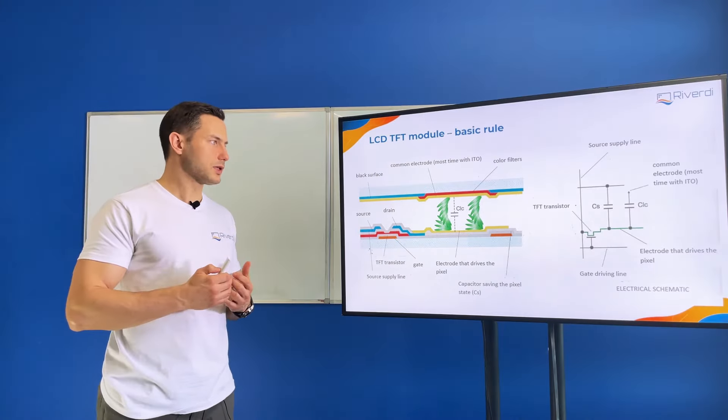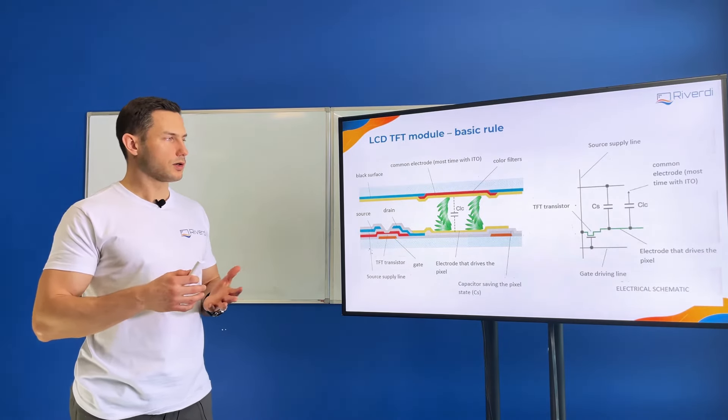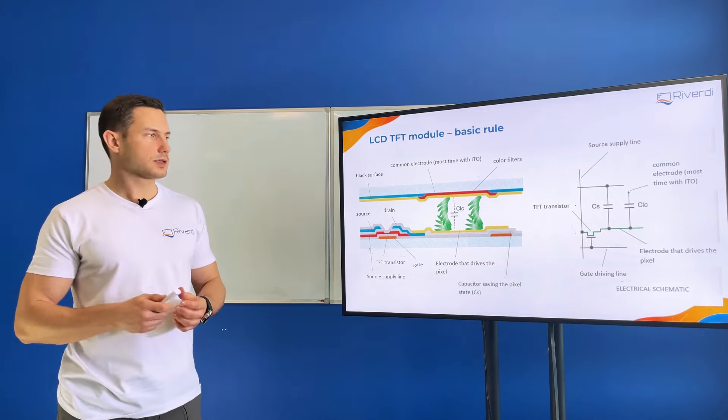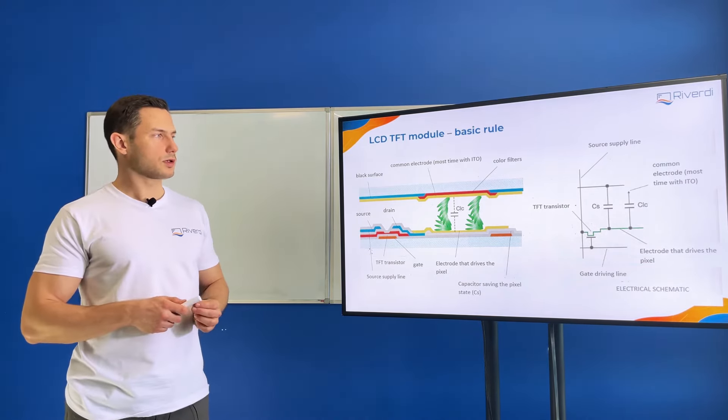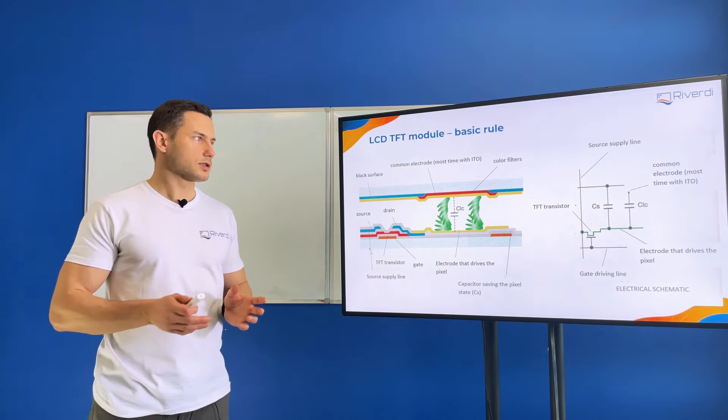In a TFT, we use a lot of grayscale. We switch on and off the light with steps, and usually for TFT it will be 8 bits per color.